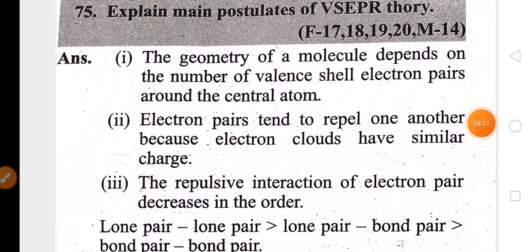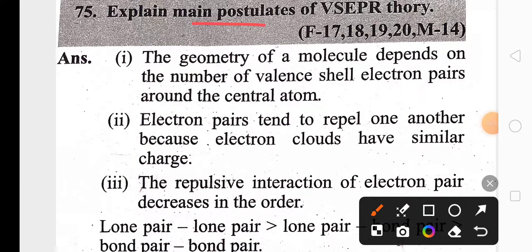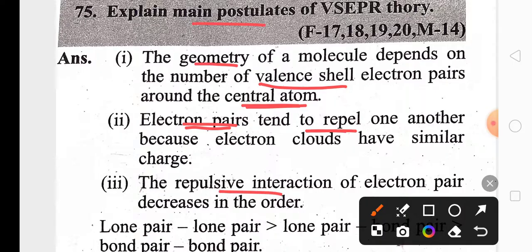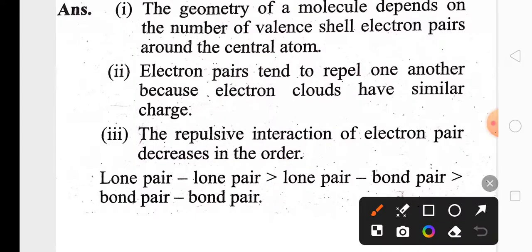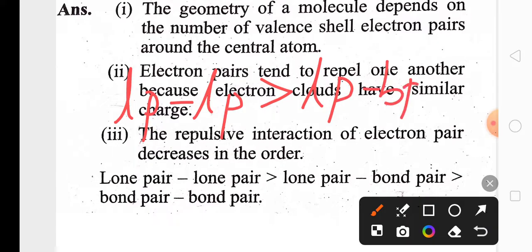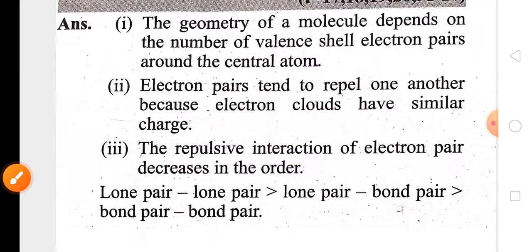A three-mark question covers the postulates of Valence Shell Electron Pair Repulsion (VSEPR) theory. This theory explains that the geometry of a molecule depends on the number of electron pairs around the central atom — both lone pairs and bond pairs. Electron pairs repel each other due to their negative charge. The order of repulsion is: lone pair–lone pair > lone pair–bond pair > bond pair–bond pair. This order is very important.